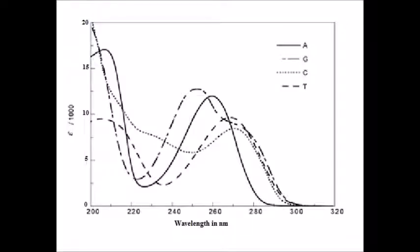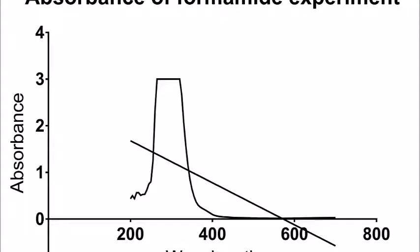Now, let's move on to my results. Using the pure formamide solution as my blank, I performed the spectral analysis three times, and the results were all very consistent with one another. As you can see, there is indeed 100% absorbance between 260 and 280 nanometers.